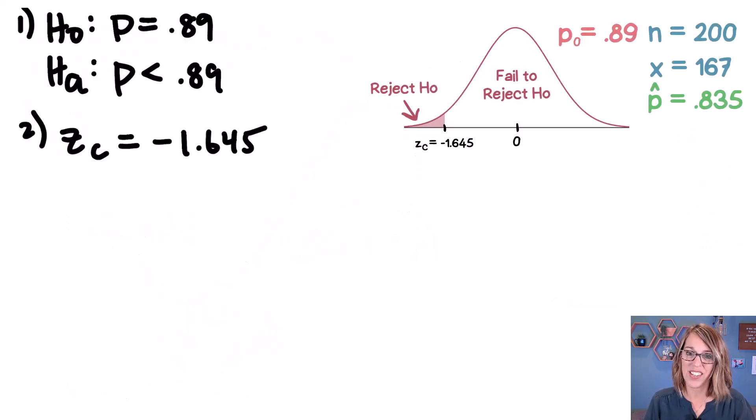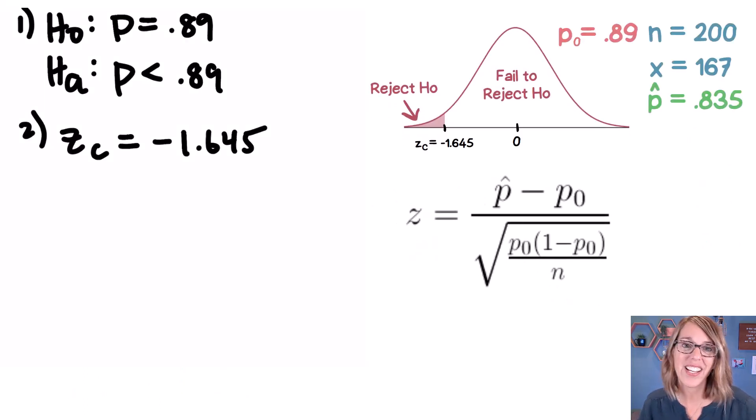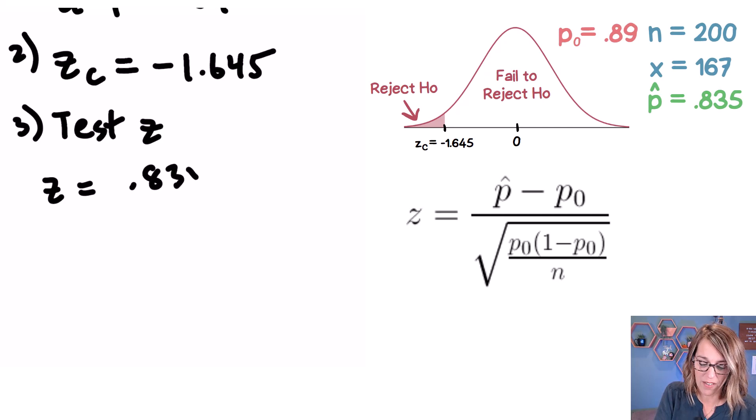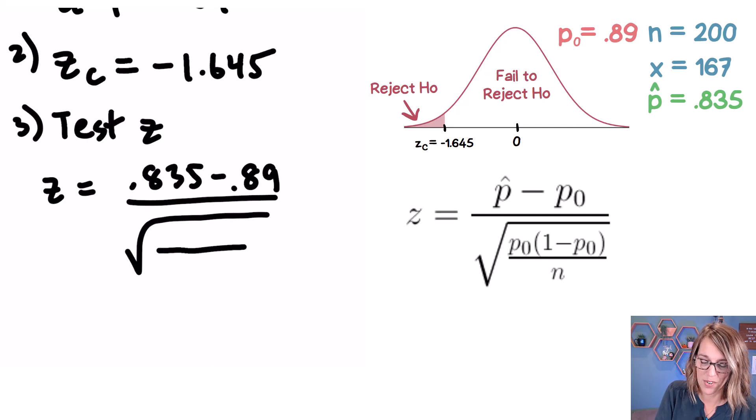Let's go ahead and do this calculation. And we need our formula to do that. Let me move this up out of the way a little bit because we're ready here for step number three. And that is our test value. So our test Z. And our test Z is equal to our sample proportion, 0.835, minus our expected proportion of 0.89, all divided by a big square root. So the square root of, in our numerator, we're going to put P sub 0.